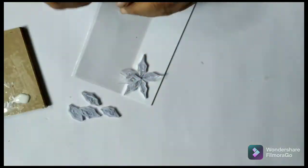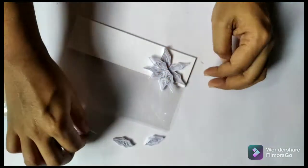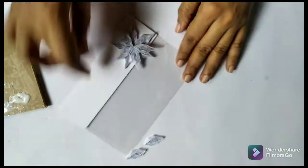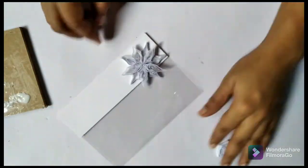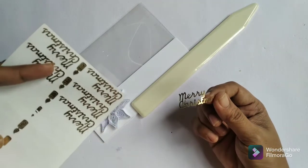For the next layer of the flower, you can add the elements in between the previous two quilled elements. So now we can get two layers of the flower. The quilling part is done, and now I add a Merry Christmas sentiment.